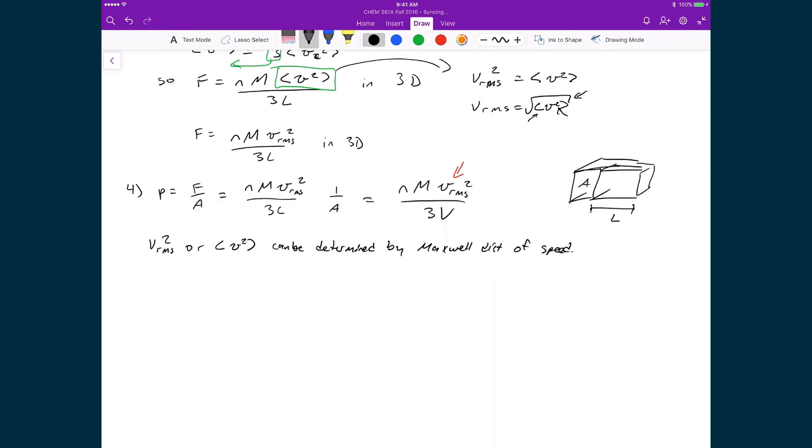Because the Maxwell distribution of speeds gives us a probability of finding a particle traveling at a specific velocity, if we want to define the average of that, then what that's equal to is the value itself. So in this case, since we're finding the average of the speed squared, then it's the speed squared times the probability of finding the particle at that speed.